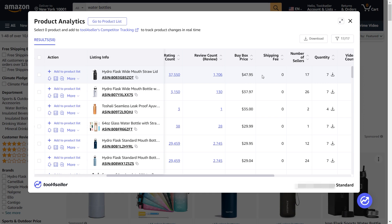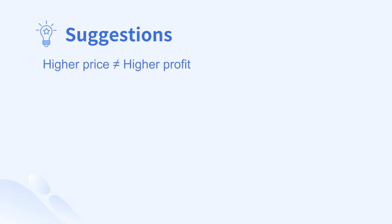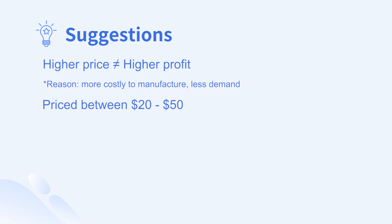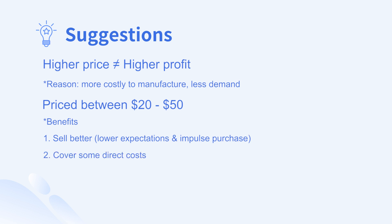More expensive products don't always equal more profits, because higher priced items can be more costly to manufacture and have less demand. It's suggested to choose products that sell at $20 to $50. Products in this price range tend to sell better because cheaper products have fewer expectations from buyers and are more likely to result in a purchase. On the other hand, they can cover direct costs like the cost of goods sold, PPC costs, and Amazon fees.